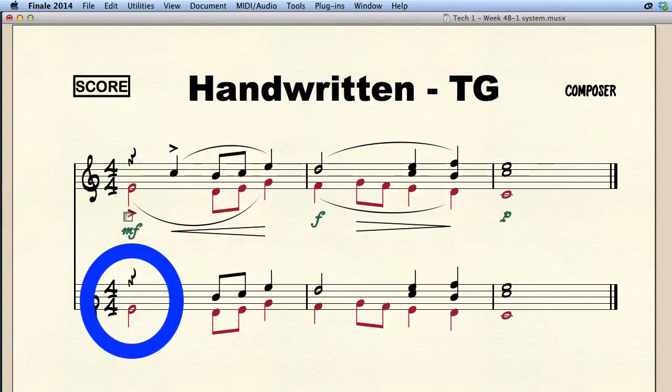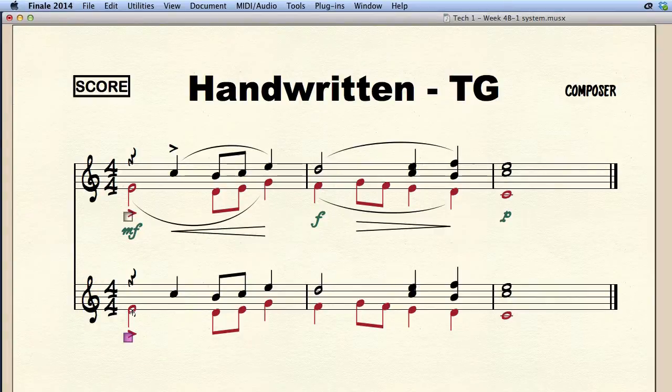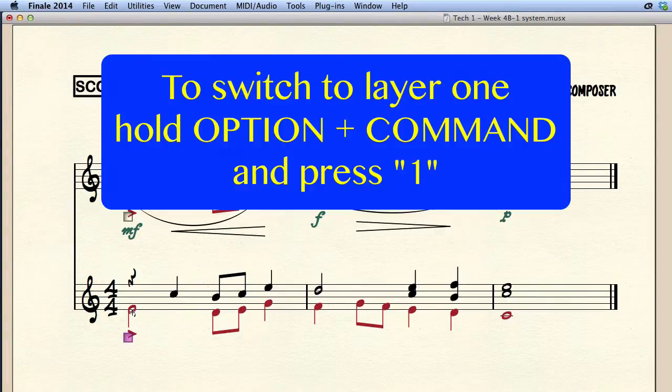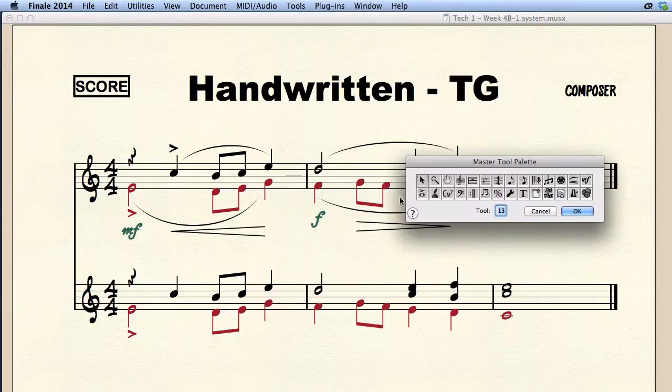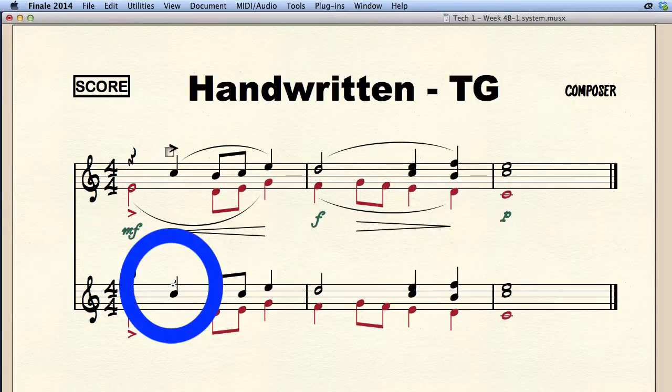In order to add an accent to the C on B2 we need to switch to layer 1. Select the articulation tool, hold A and click the note.